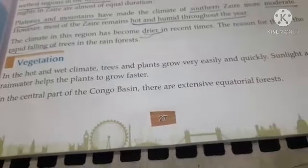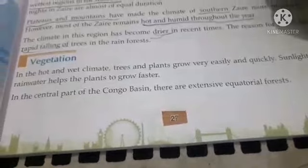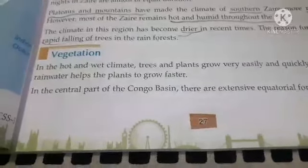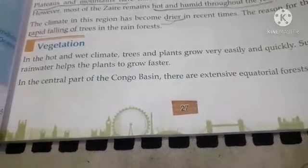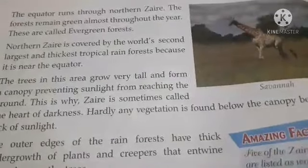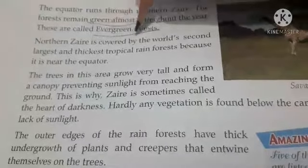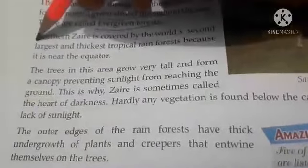In the hot and wet climate, trees and plants grow very easily and quickly. Sunlight and rainwater help plants to grow faster. In the central part of the Congo basin there is an extensive equatorial forest. The equator runs through northern Zaire and the forest remains green almost throughout the year — these are evergreen forests. Northern Zaire is covered by the world's second largest and thickest tropical rainforest.